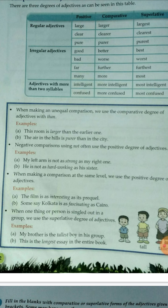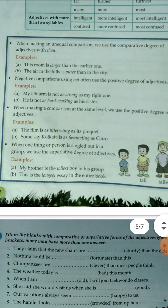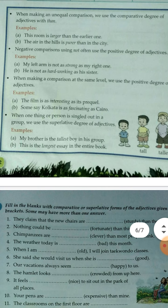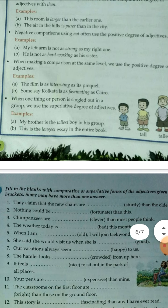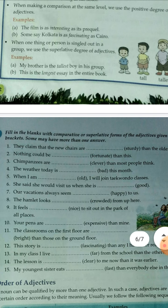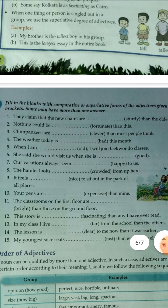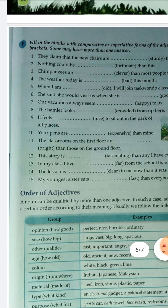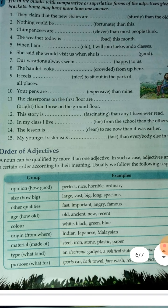The next rule: when one thing or person is singled out from a group, we use the superlative degree of the adjective. For example: 'My brother is the tallest boy in this group.' The next part is the exercise, which you have to do.